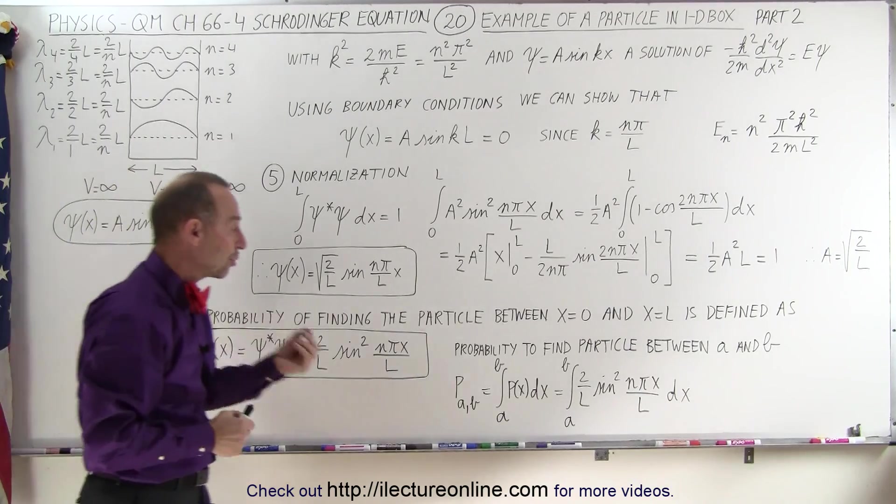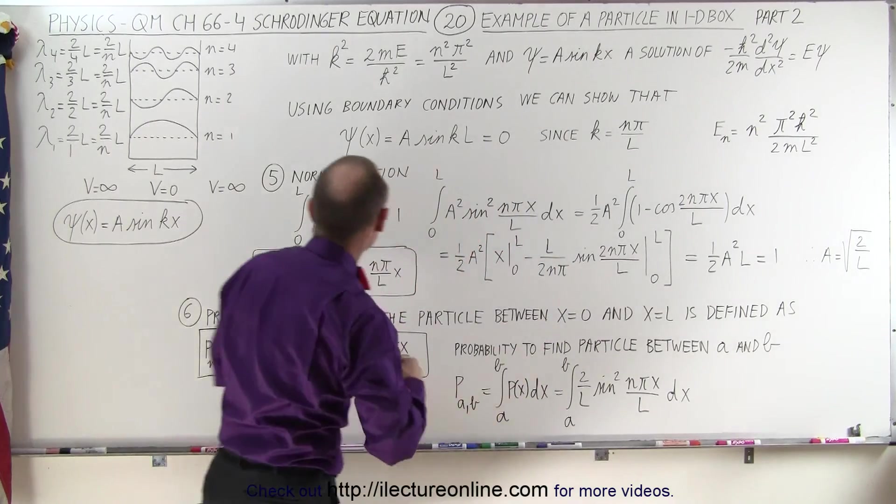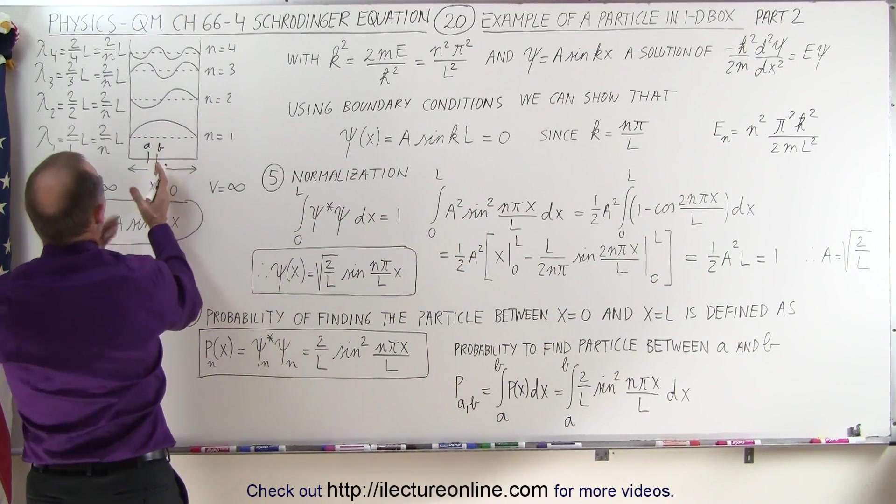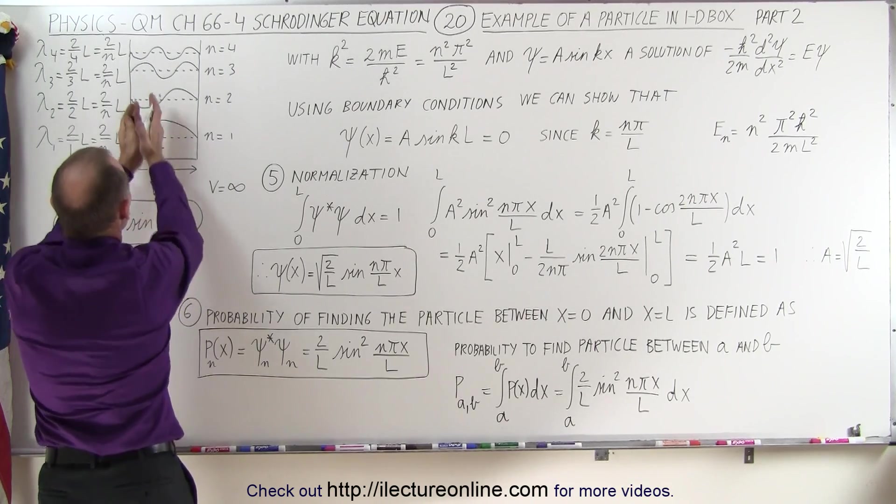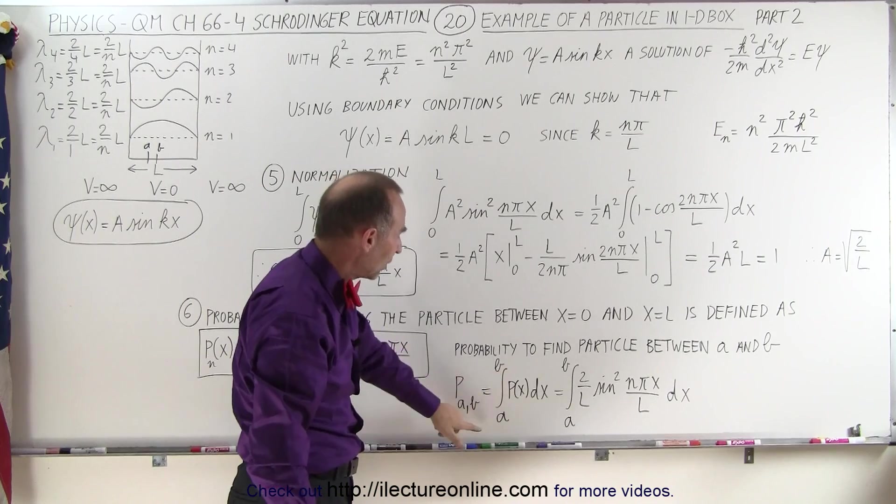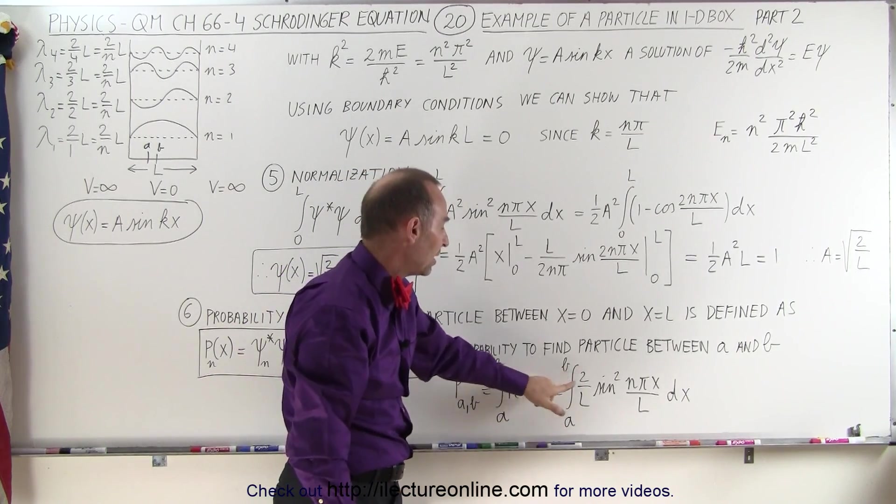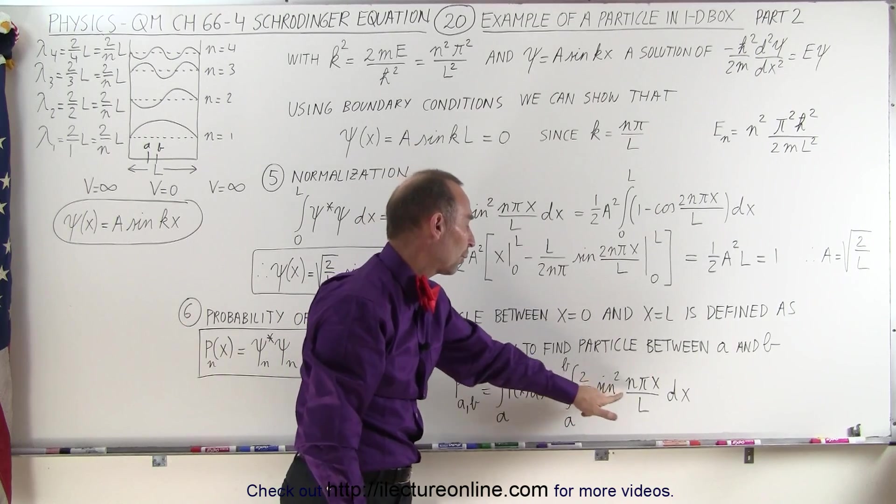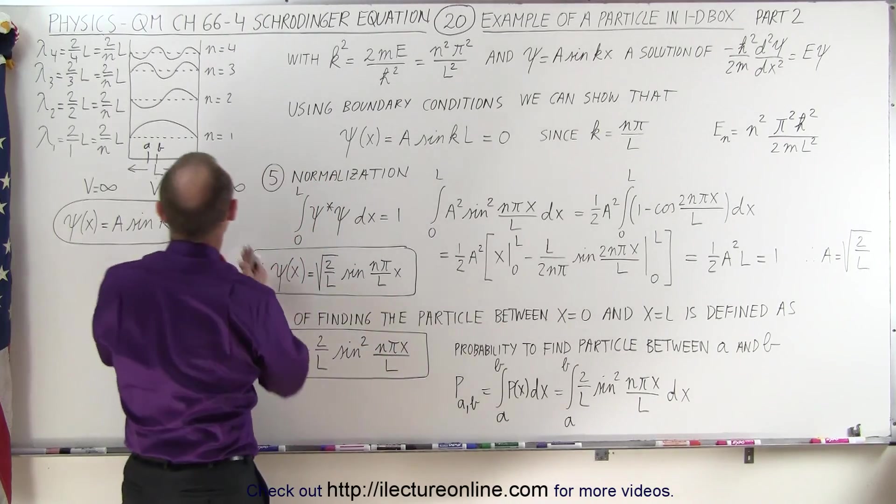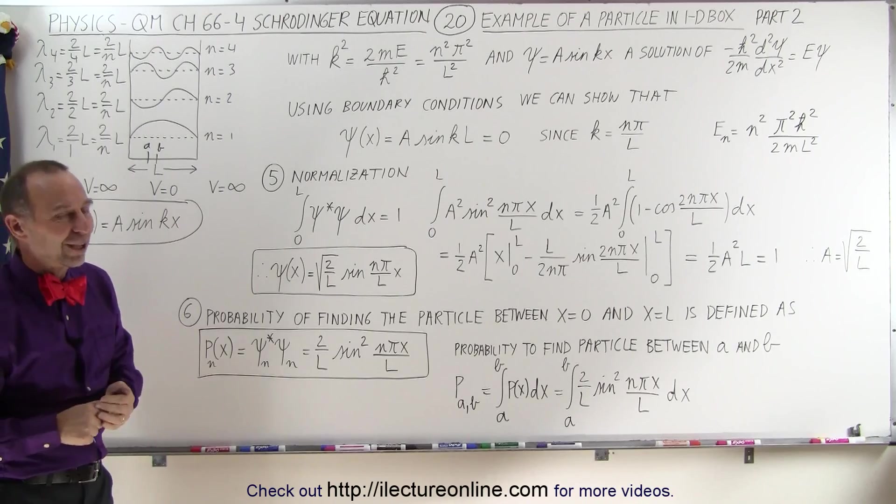Also realize that if we're trying to find the probability of finding the particle between some points, let's say a and b, let's say that this here is a, and this here is b, we want to find the probability of finding the particle within that range of x. We can do that by taking the integral from a to b of the probability function, and so in this case it would be from a to b of two over l times the sine squared of the angle, and then we find the probability of finding the particle in that particular range.